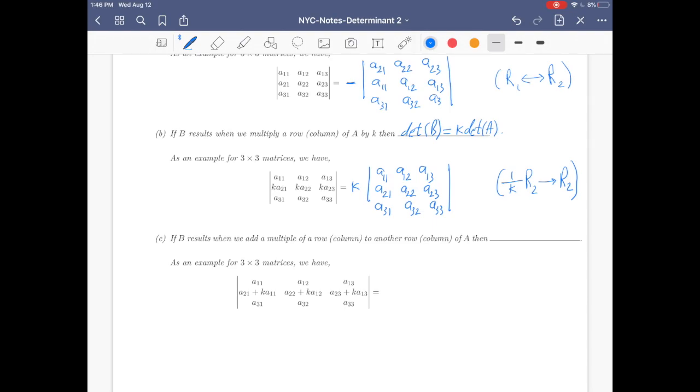Part C: if B results when we add a multiple of a row or column to another row or column of A, then determinant won't get changed, so they have the same determinant. As an example for three by three matrices, this is what we have.